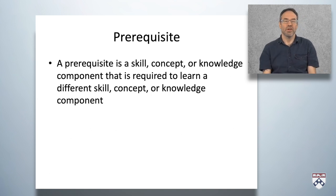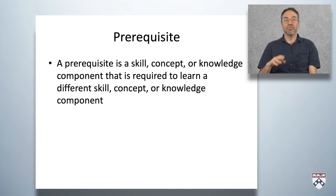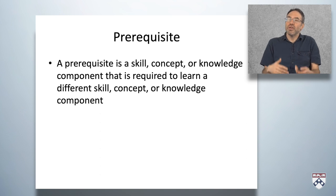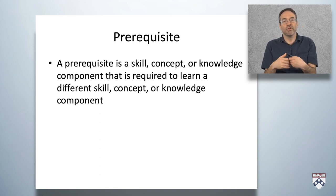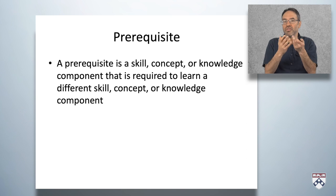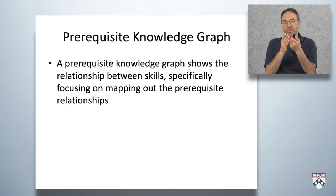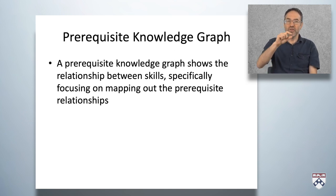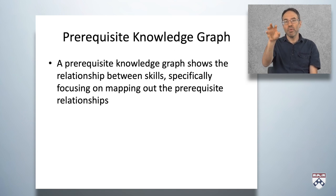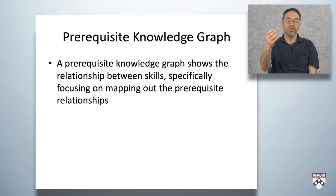What's a prerequisite? A prerequisite is a skill, concept, or knowledge component that's required to learn a different skill, concept, or knowledge component. For example, you have to learn addition before you learn multiplication, so addition is a prerequisite for multiplication. A prerequisite knowledge graph shows the relationship between skills, specifically focused on mapping out those prerequisite relationships, so that for every skill we can see its full context — the skills that lead up to it and the skills that follow it.